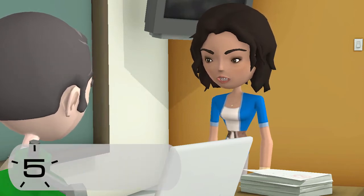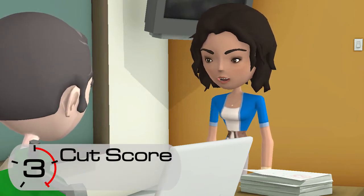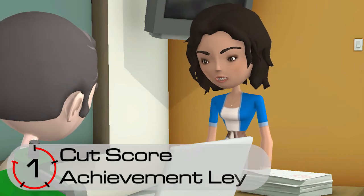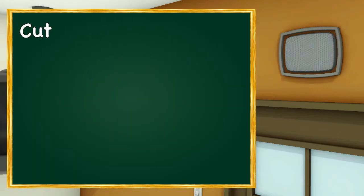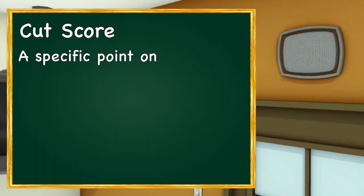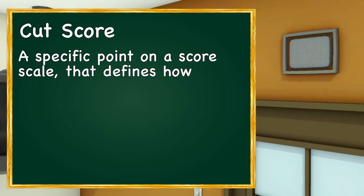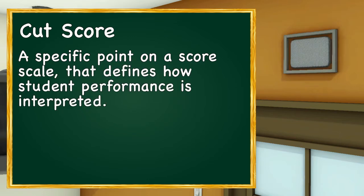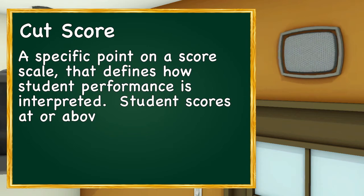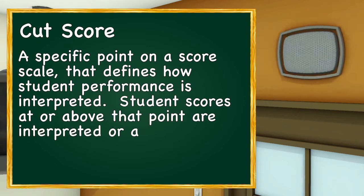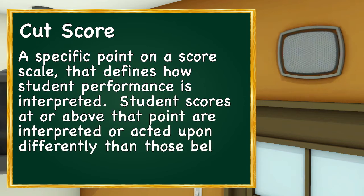Once ATI has the DL scores, the cut scores are set to correspond to the state's achievement levels. A cut score is a specific point on a score scale that defines how student performance is interpreted. Student scores at or above that point are interpreted or acted upon differently than those below that point.